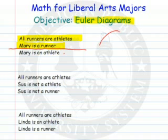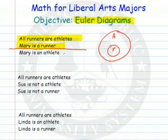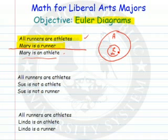We use Venn Diagrams. So here's my circle. All runners are athletes — so here are my athletes. And all runners are athletes, so my runners are inside. There's the first premise. Mary is a runner, so Mary's inside this circle. Those are my two premises. Does it follow — is it a logical conclusion — that Mary is an athlete? Well, yes. Mary's inside the circle of athletes. So this is a valid argument.